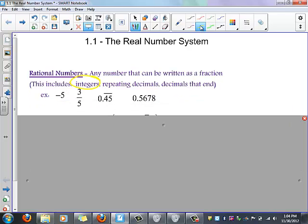So some examples. Negative 5, and that's because negative 5 can be written as negative 5 over 1. Now it's a fraction, and so it's a rational number.